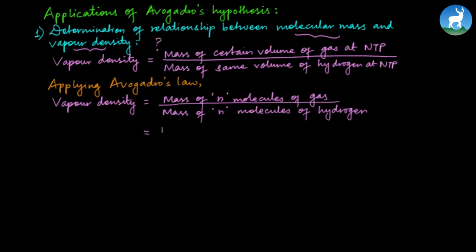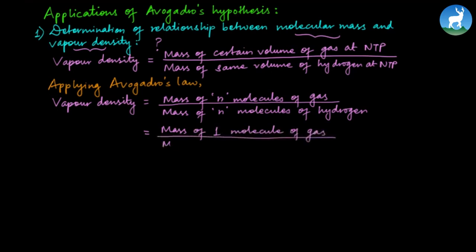So vapor density D is equal to the mass of one molecule of gas divided by the mass of one molecule of hydrogen. This is equation 1.